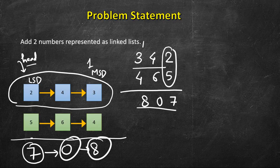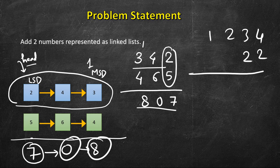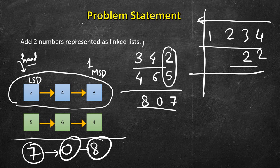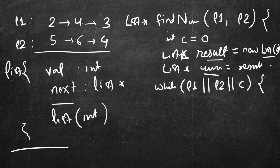The lists can be of different sizes — for example one list may have 4 digits and the second only 2. We run until both lists become null. Also at the last position we can have an additional carry which increases the length of the result list. That's why we check all three conditions — if any of them is true we continue the loop.